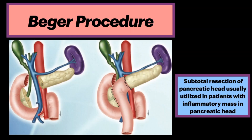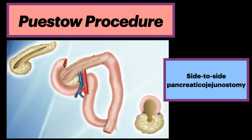The Beger procedure is a subtotal resection of the pancreatic head, usually utilized in patients with an inflammatory mass in the pancreatic head. Drawings here show resection of the pancreatic neck and excavation of the pancreatic head, the intrapancreatic common bile duct, and the inferior portion of the uncinate process. There is sparing of the duodenum.